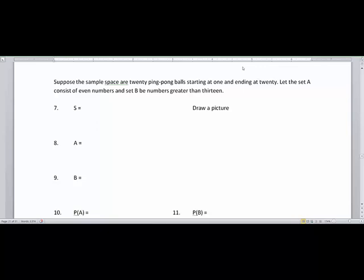We have a sample space of 20 ping-pong balls starting at 1 and ending at 20. So the ping-pong balls go 1, 2, 3, 4, 5, 6, 7, 8, 9, 10, 11, 12, 13, 14, 15, 16, 17, 18, 19, 20. We're going to let the set A be all of the even numbers and set B all the numbers that are greater than 13.